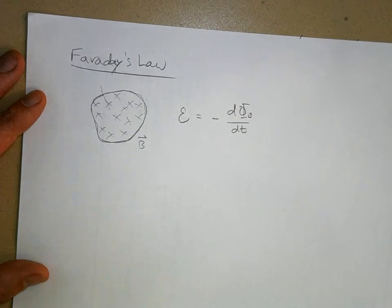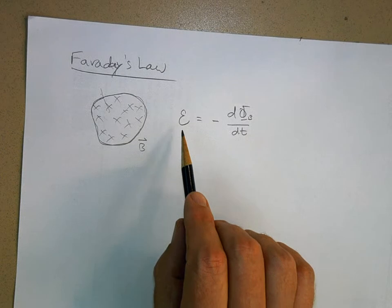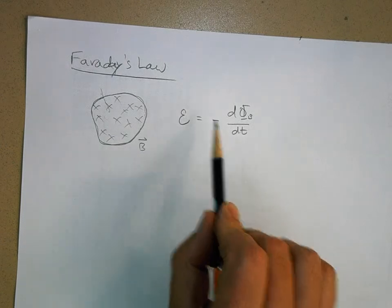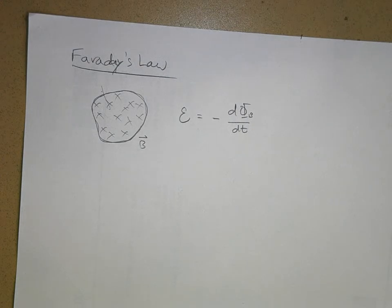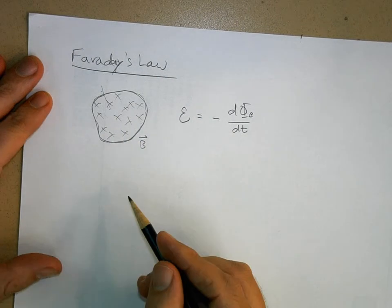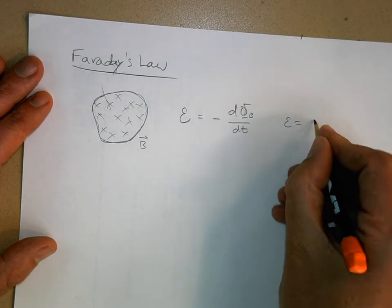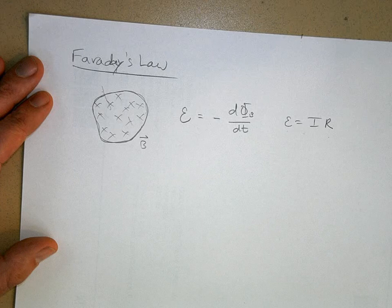The negative sign — that's Lenz's Law. It's a way of saying the EMF will be a voltage such that it will create a current that will oppose the rate of change of magnetic flux. Anytime you have a wire and there's a magnetic field in there, if you change the magnetic field you're going to create a voltage in that wire. The wire has some resistance, so E equals IR — the resistance and the current will obey Ohm's law.